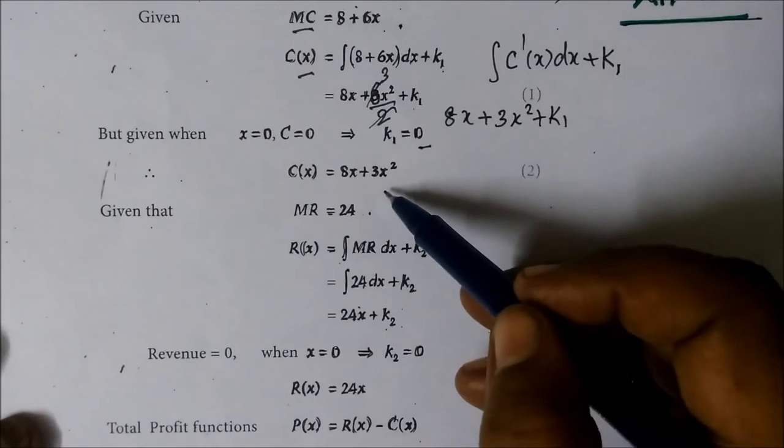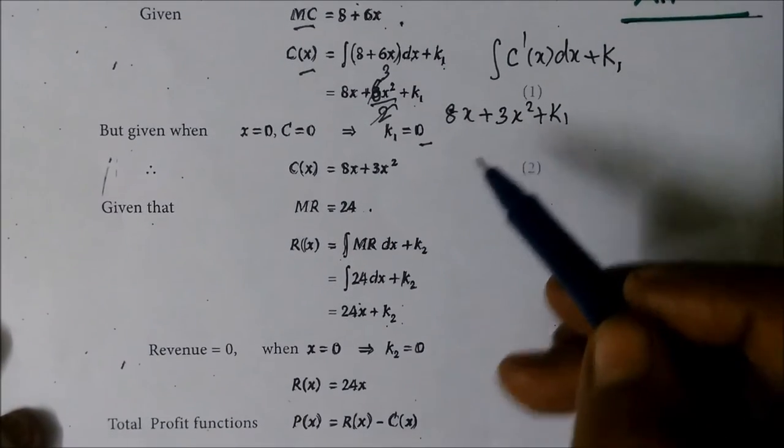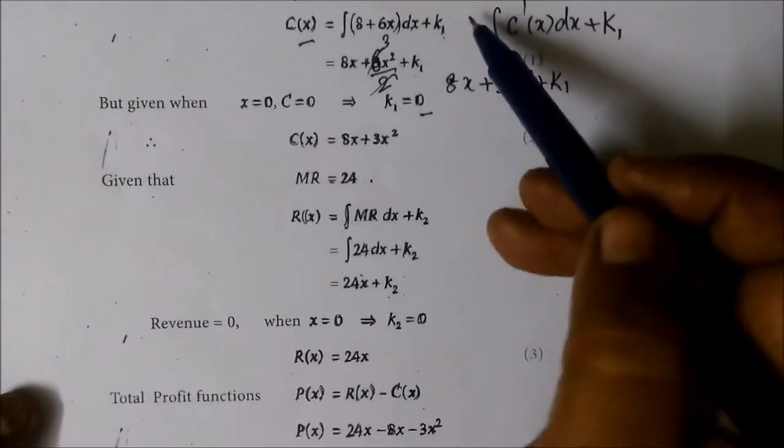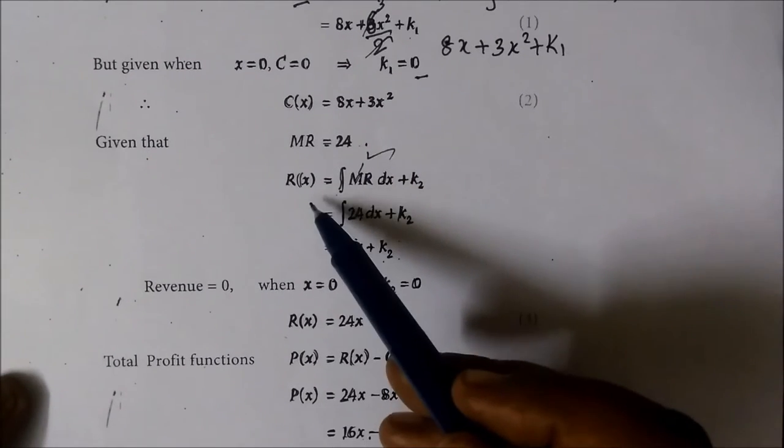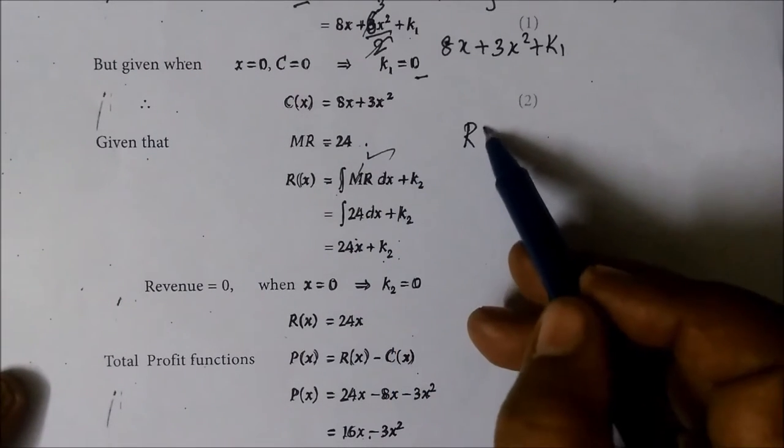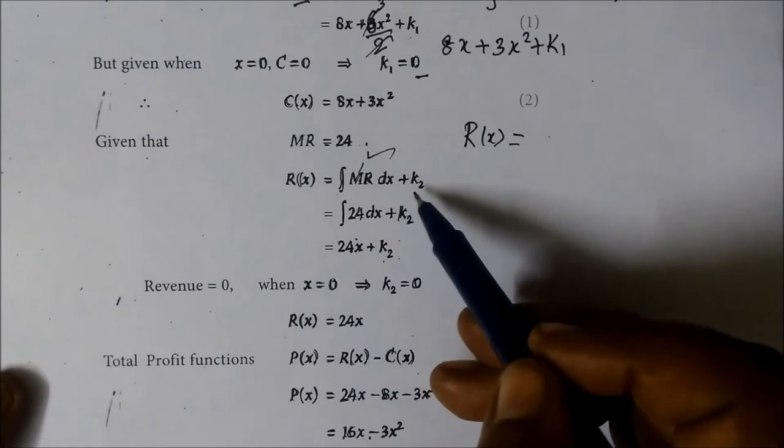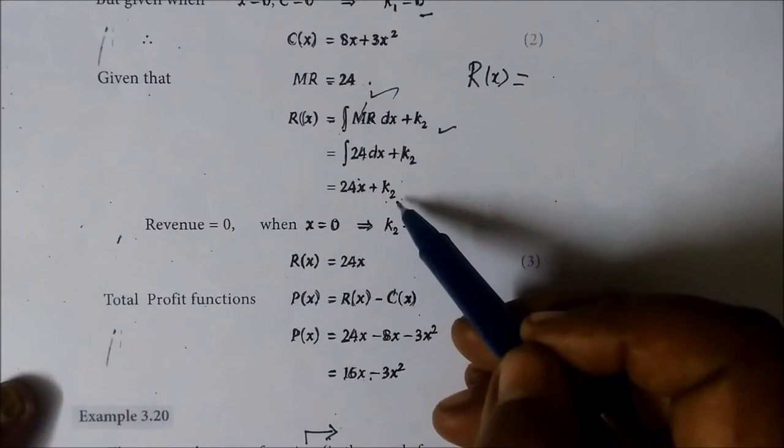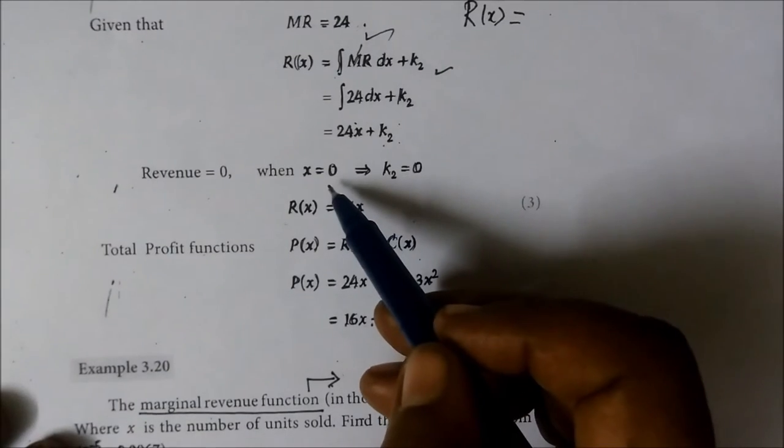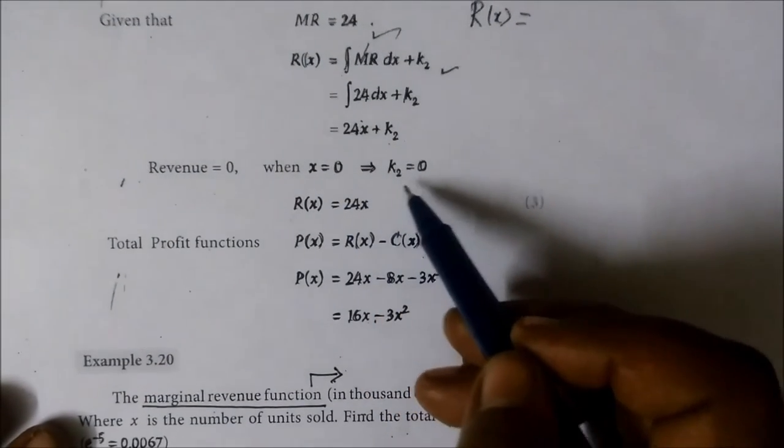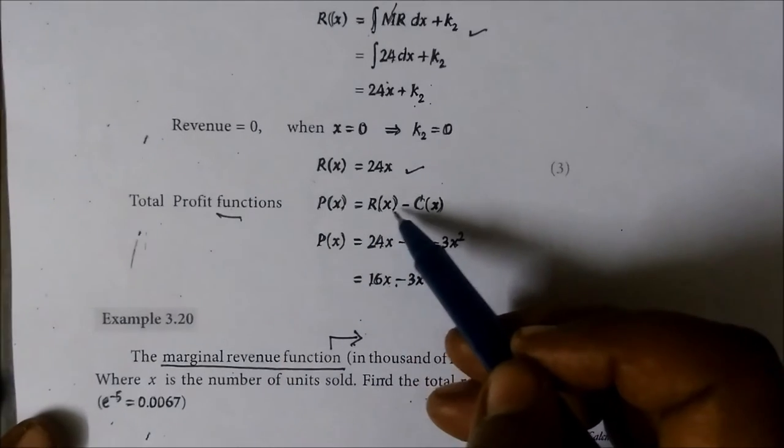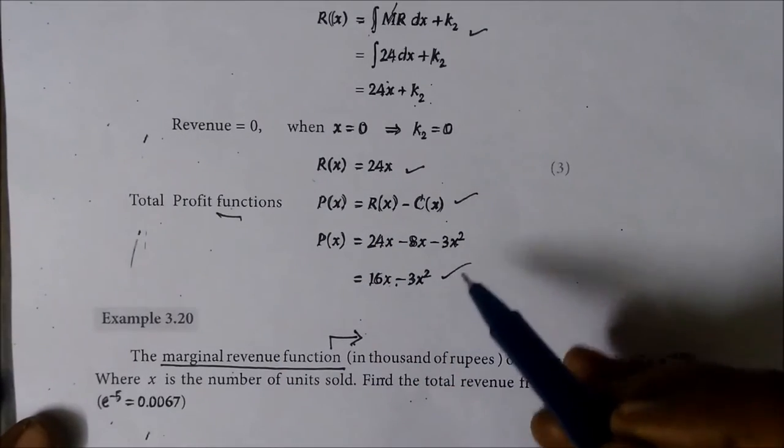C(x) equal to 8x plus 3x squared. R(x) is equal to integral of MR dx plus K₂. Value substitute and constant equals x. K₂ is equal to 0, revenue is equal to 0. So R(x) is equal to 24x. Profit formula is R(x) minus C(x).